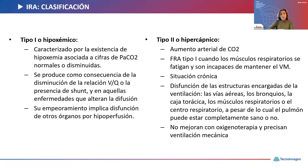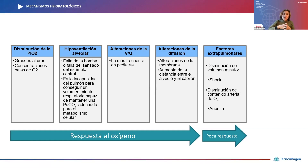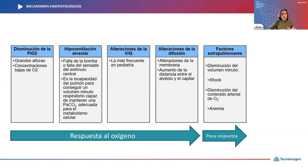Vamos a tener dos tipos: Tipo 1, hipoxémico, caracterizado por hipoxemia con PCO2 normal o disminuida; y Tipo 2, hipercápnico, con aumento arterial de CO2, relacionado a veces con fatiga muscular progresiva o patologías crónicas, asociado a disfunción de estructuras encargadas de la ventilación. En estos casos no mejora solamente con oxigenoterapia sino que además necesitamos ventilación mecánica. Los cinco mecanismos fisiopatológicos incluyen: disminución de la PIO2, hipoventilación alveolar, alteraciones de la relación V/Q, alteraciones de la difusión, y factores extrapulmonares como el shock.